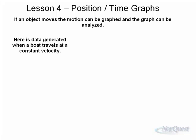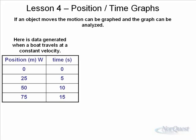Here's data generated when a boat travels at a constant velocity. Assuming it has a running start and goes by a certain marker at a certain speed, at zero time as it crosses past the marker, it has gone zero distance. After five seconds, it will have gone 25 meters west. After 10 seconds, 50 meters. After 15 seconds, it's gone 75 meters.